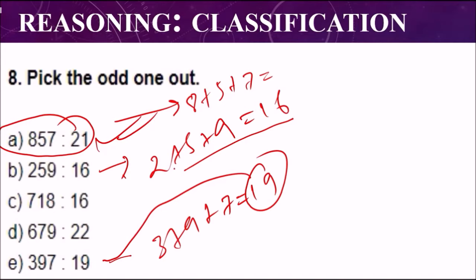But you can check option A: 8 plus 5 is 13, and 13 plus 7 is 20, but here it is 21. So this is different. You can apply any other logic if you have, but the option will be A here.